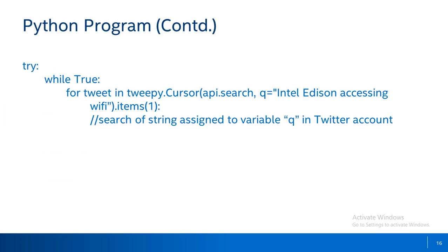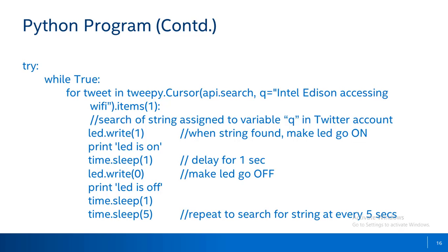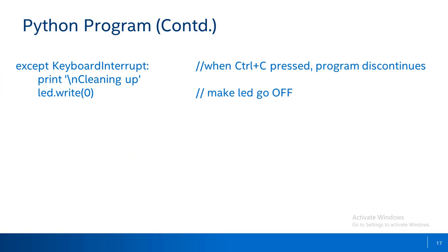In this section of the program we use the Tweepy API to search for a unique key in your account. For this application the target string is 'Intel Edison accessing Wi-Fi', which can be modified as needed. If the specified string is found, the selected GPIO of Intel Edition goes on and off continuously at certain intervals. When you press Ctrl+C it is accepted as a keyboard interrupt, stopping the application and making the GPIO go low.